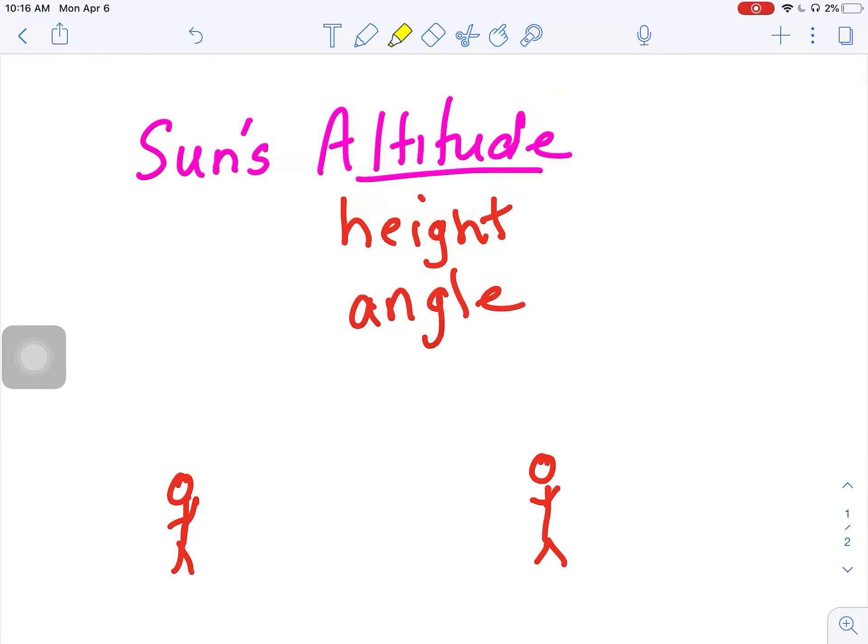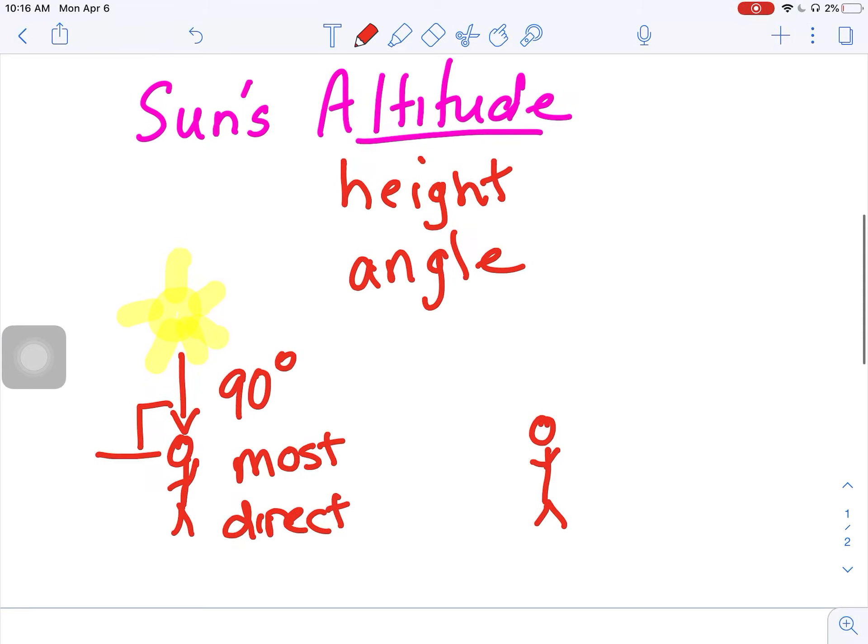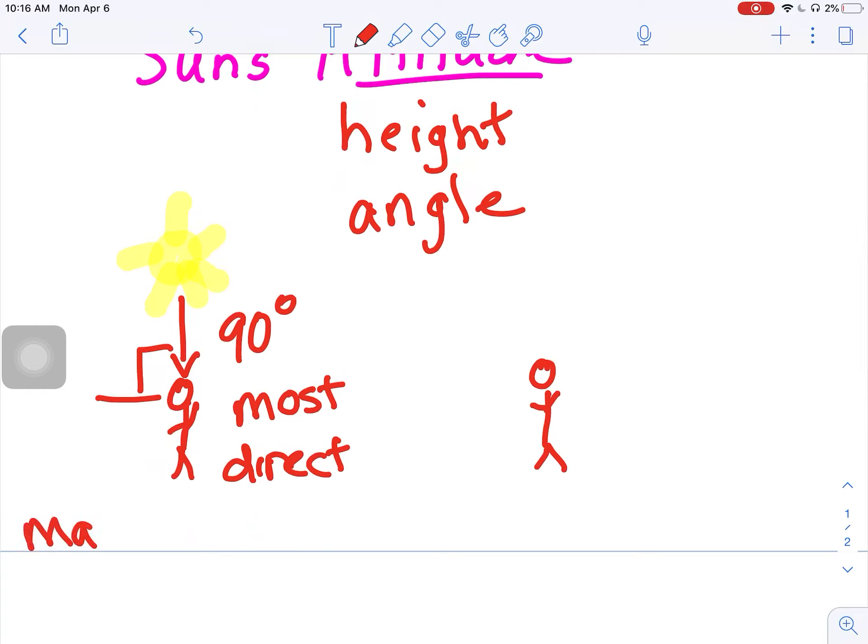So I'm gonna draw a sun. If your sun is directly above you, if it's shining down directly above you at a 90 degree angle, that's when it's a 90 degree altitude or angle of the sun. That's when it's most direct and we say that's when it has its maximum insolation.